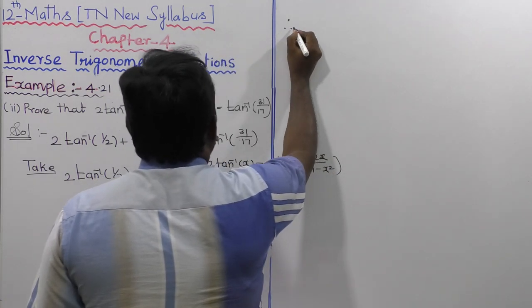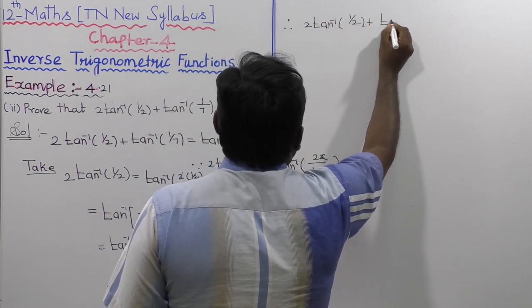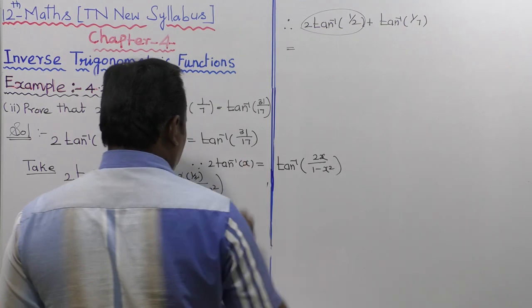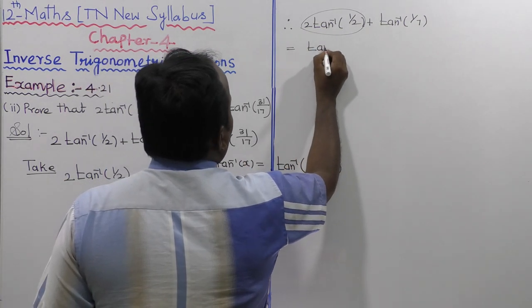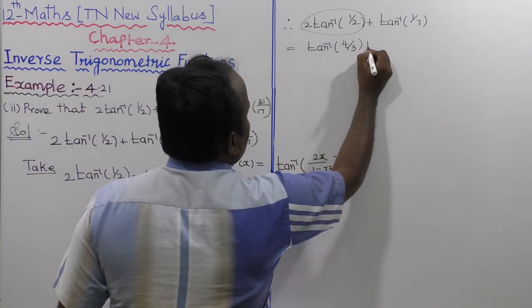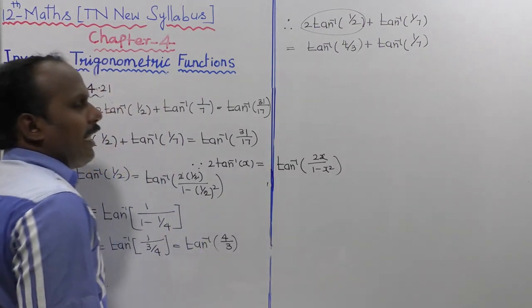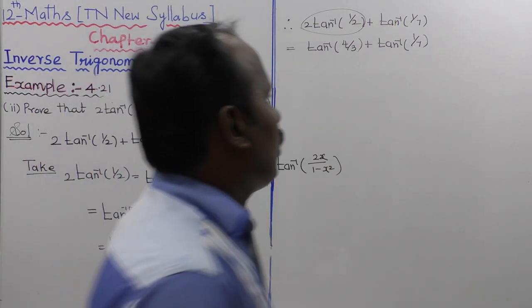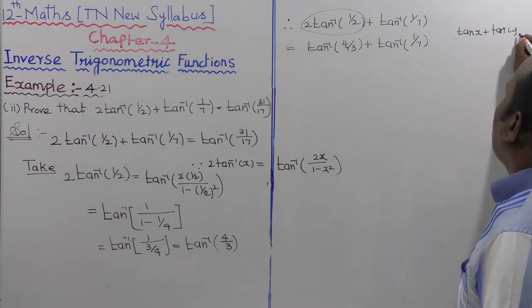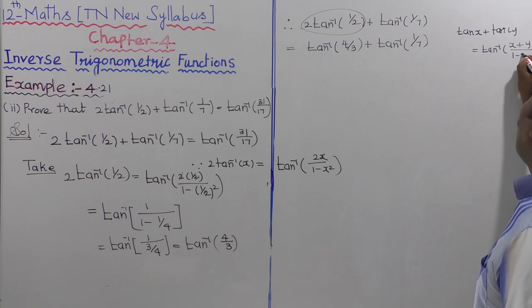Therefore, 2·tan⁻¹(1/2) + tan⁻¹(1/7) becomes tan⁻¹(4/3) + tan⁻¹(1/7). Now, the formula for tan⁻¹(x) + tan⁻¹(y) is tan⁻¹((x + y) / (1 − xy)).